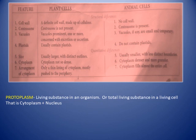Regarding size, plant cells are larger with distinct outlines due to the rigid cell wall, while animal cells are usually smaller with less distinct boundaries. The cytoplasm in plant cells is less dense because vacuoles occupy most of the space, pushing cytoplasm to the periphery. In animal cells, the cytoplasm is very dense and fills almost the entire cell.